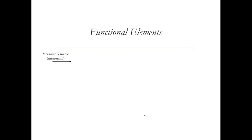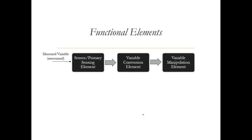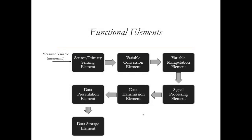These are the functional elements. We have the measured variable or measurement, then something called the sensor or primary sensing element (PSE) — this is the first part of any instrument where we sense the measurement. Then we have a variable conversion element, variable manipulation element, signal processing element, data transmission element, and data presentation element.